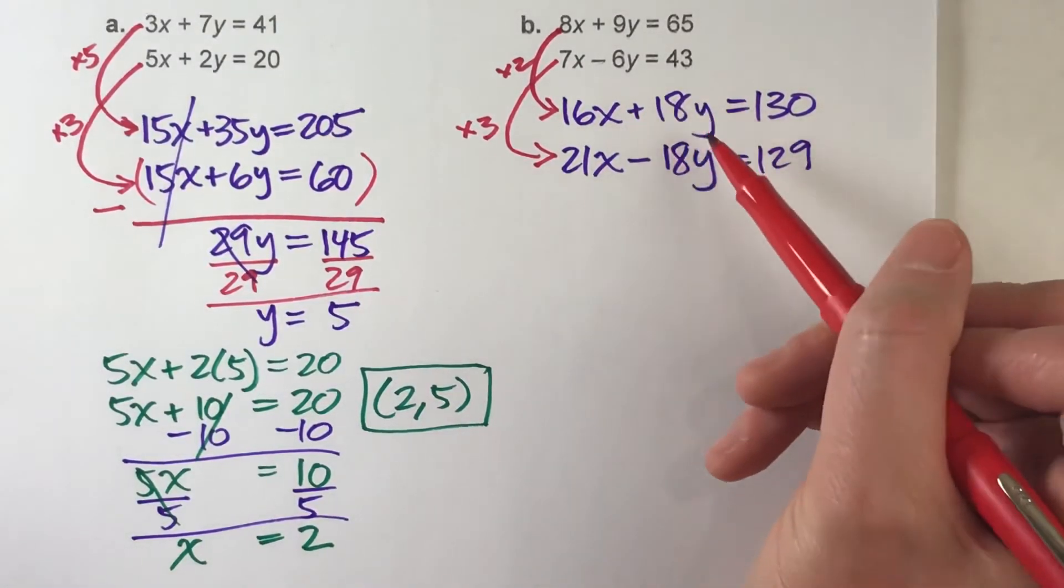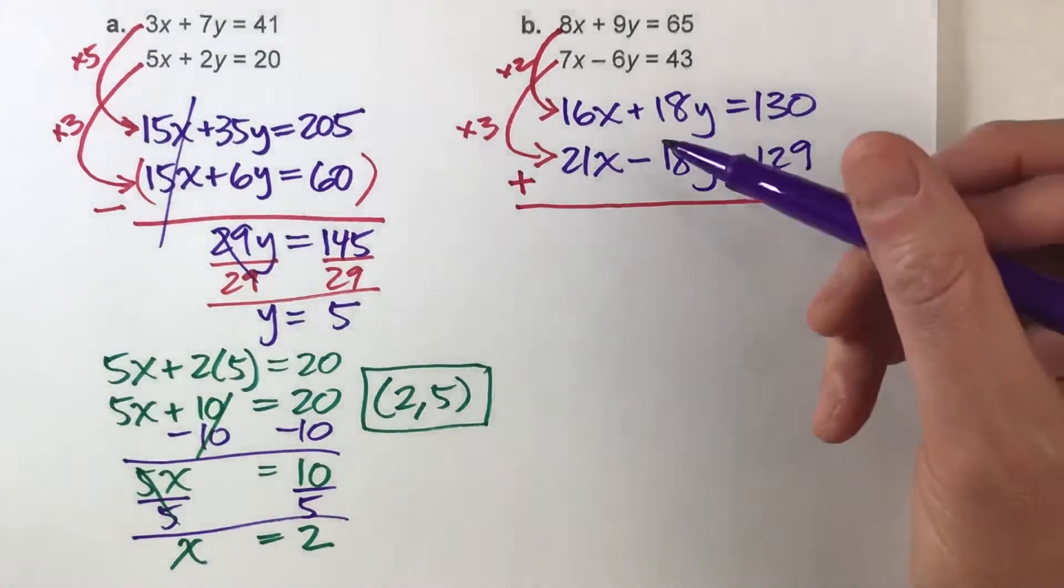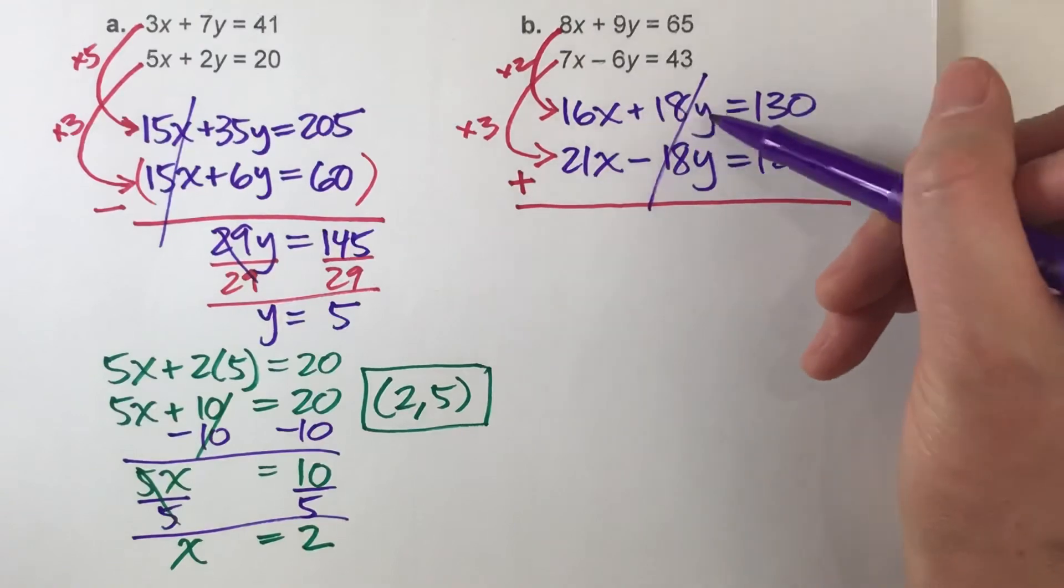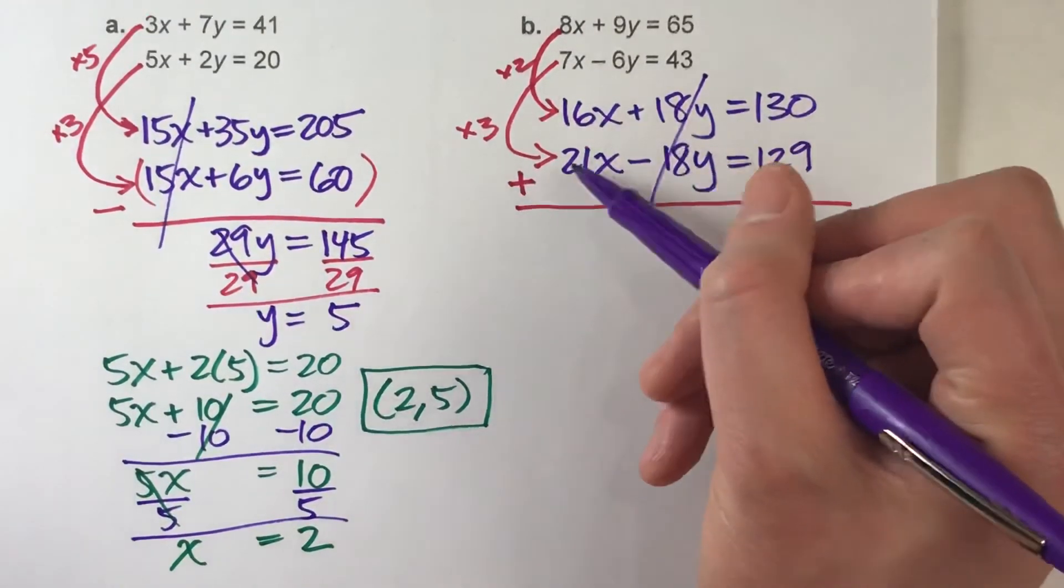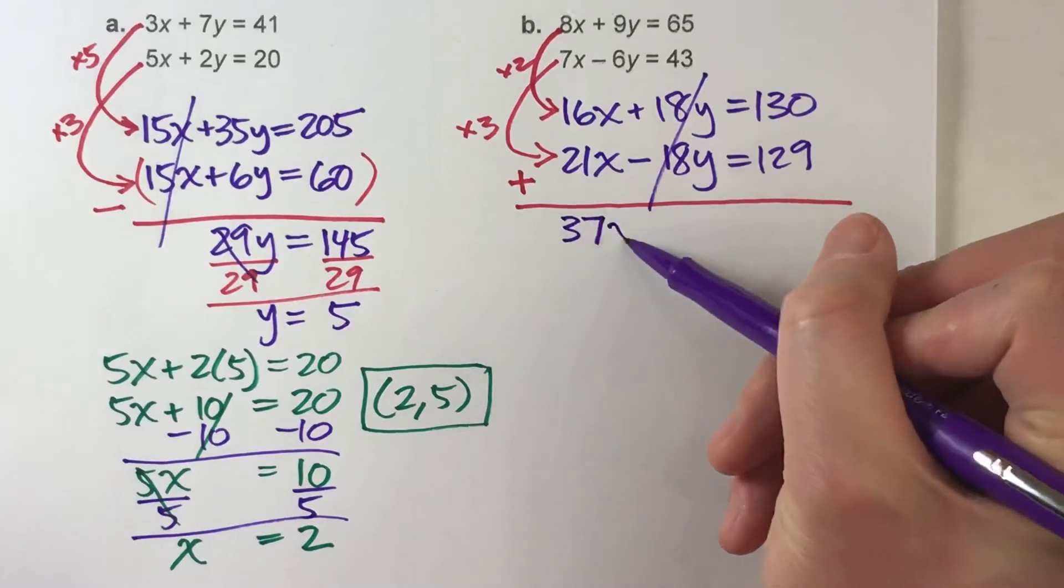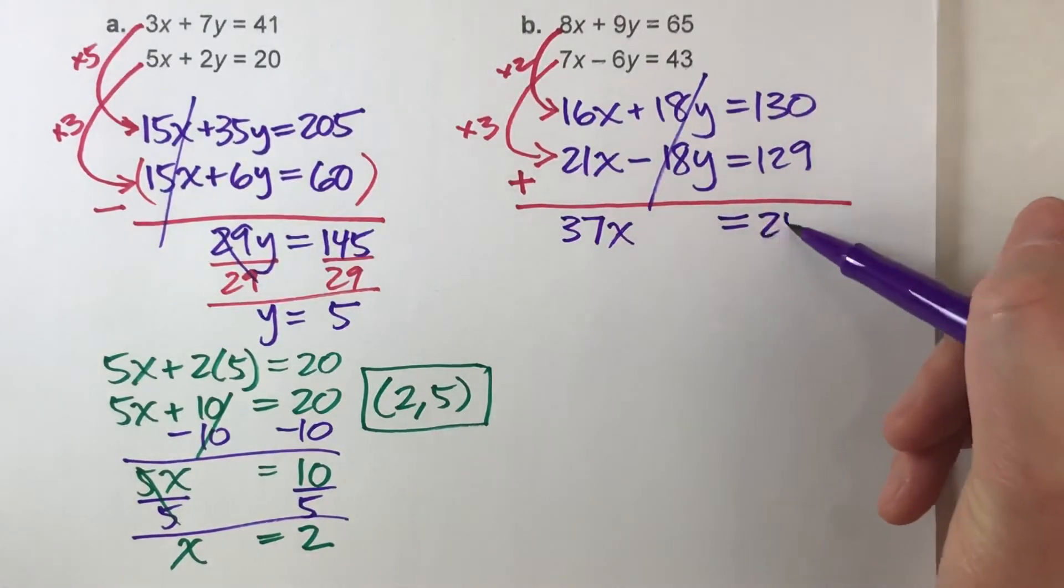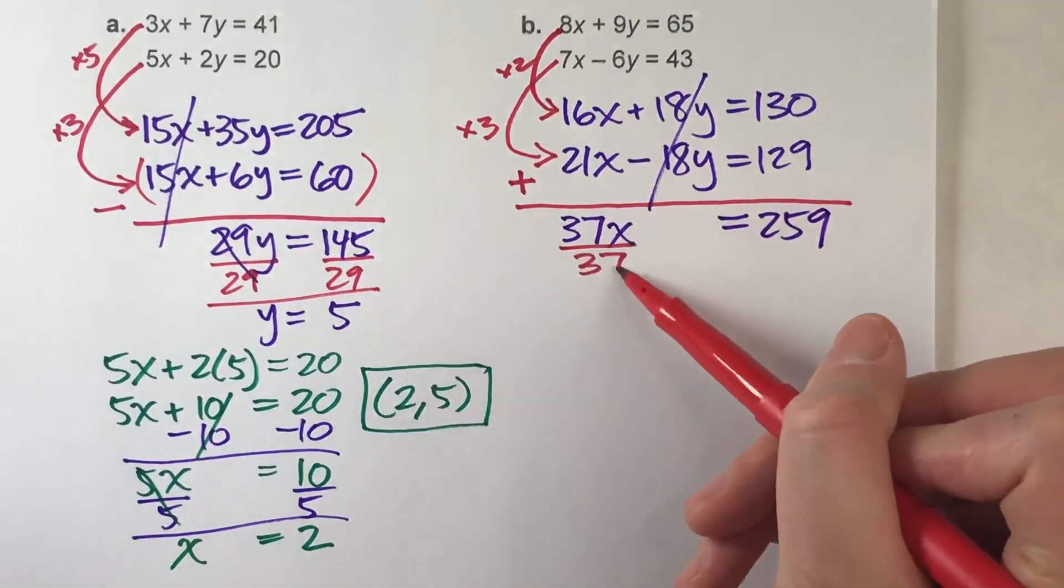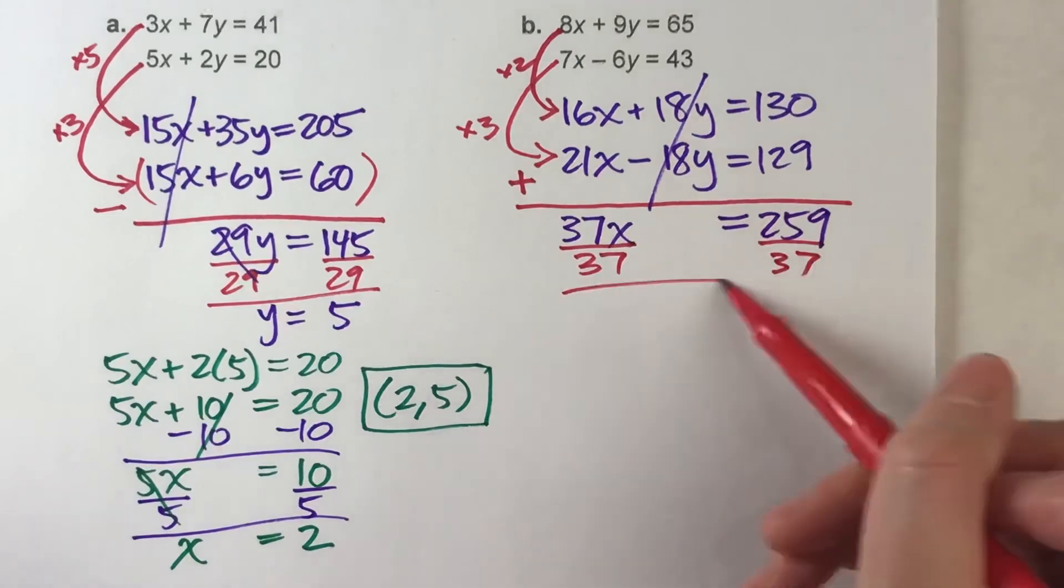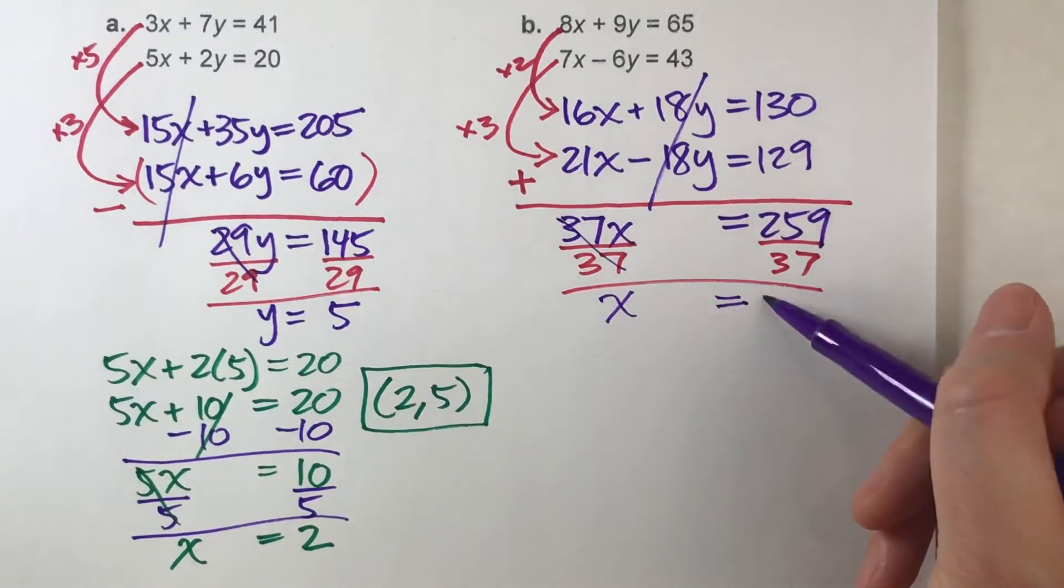I've got positive 18y and negative 18y, so I'm going to be adding the two equations together here. So the y's are going to undo each other because positive 18y and negative 18y are gone, but 16x plus 21x is 37x. On the other side I add these up, I get 259. Now solve this: I'll divide by 37 on both sides, and I end up getting x equals 7.